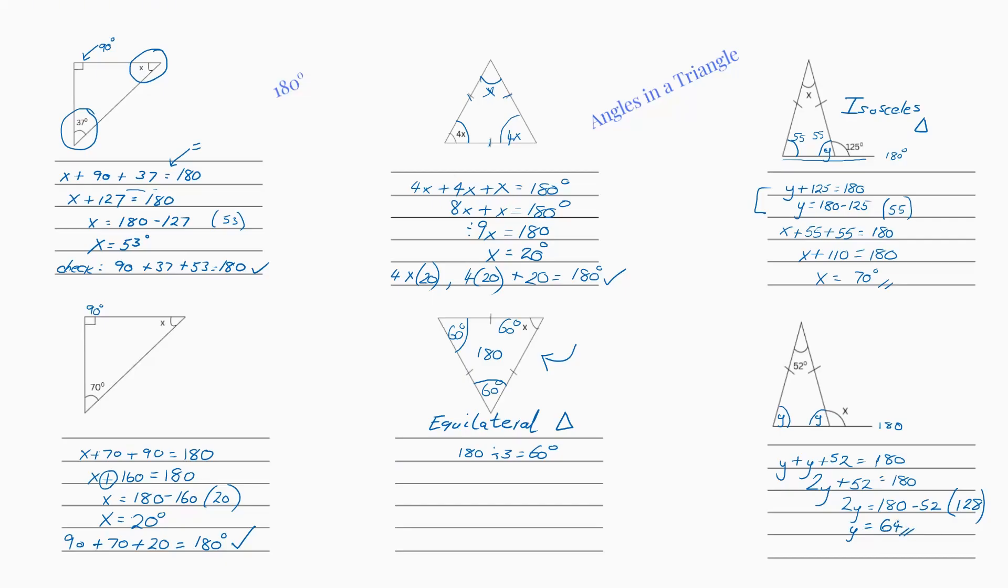So we found these two angles and they are both 64 degrees. Perfect. So now we can simply find x. So we've got x plus 64 equals 180. X equals 180, subtract 64, gives you 116 degrees.